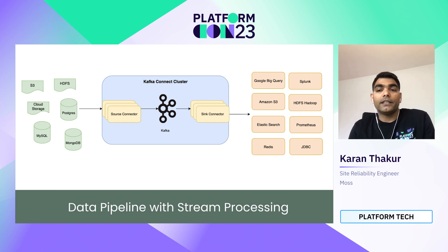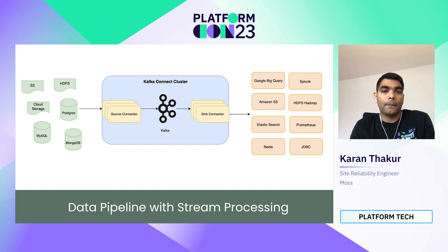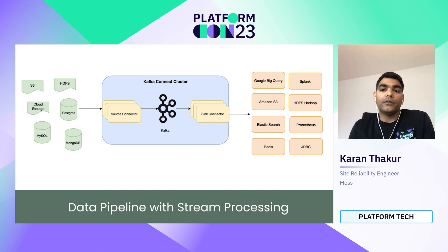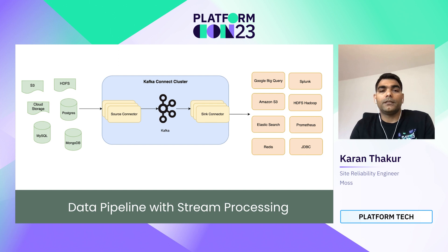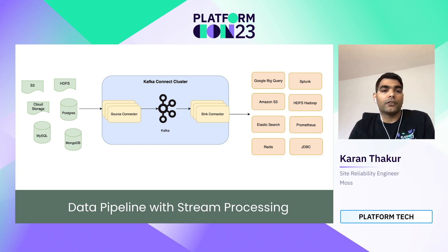We also use Kafka here, which serves as a message broker for the pipeline. Kafka handles the storage and transport of the change events captured by Debezium. Finally, there are the data stores — the destination data warehouse where our data will be stored and made available for analysis. The data store can be anything like BigQuery, S3 buckets, Elasticsearch, Redis, Prometheus, Hadoop, or JDBC. You can choose your source and destination as per your requirement and create the stream pipeline.